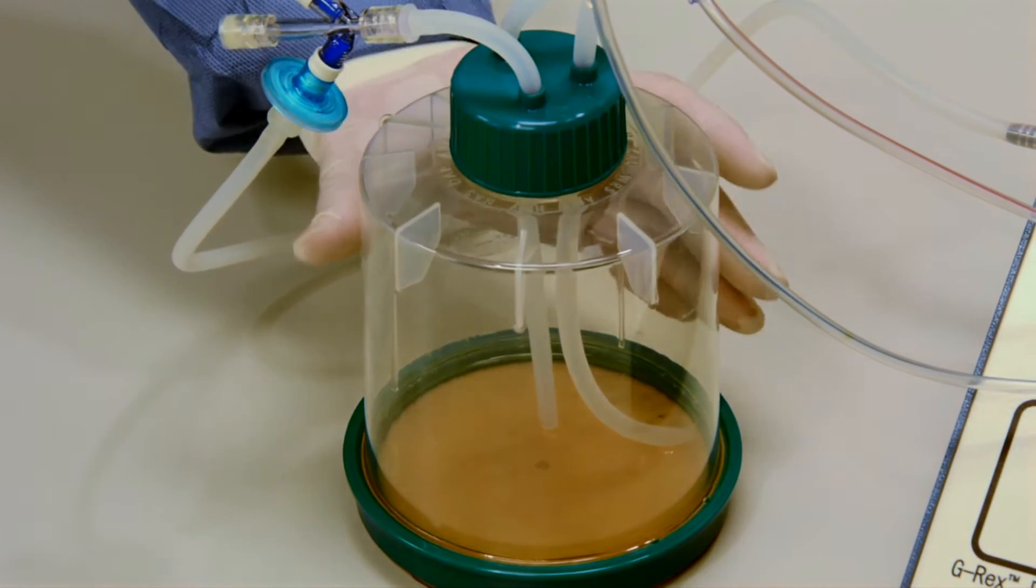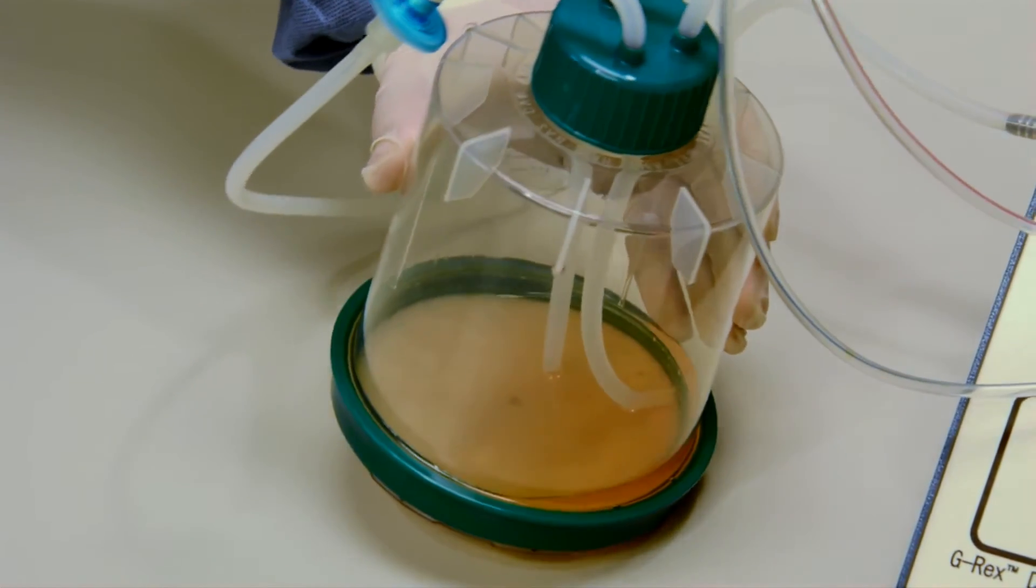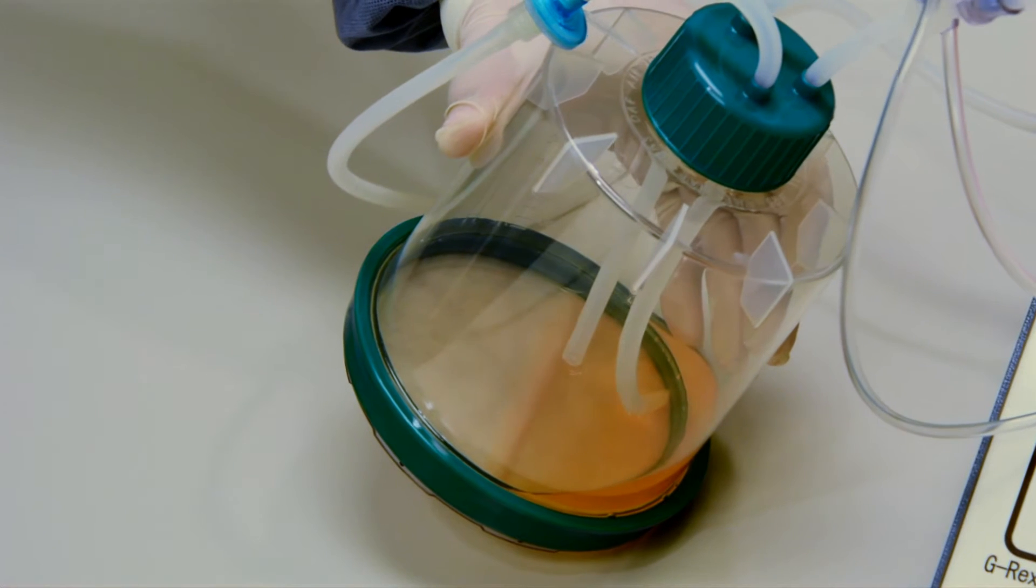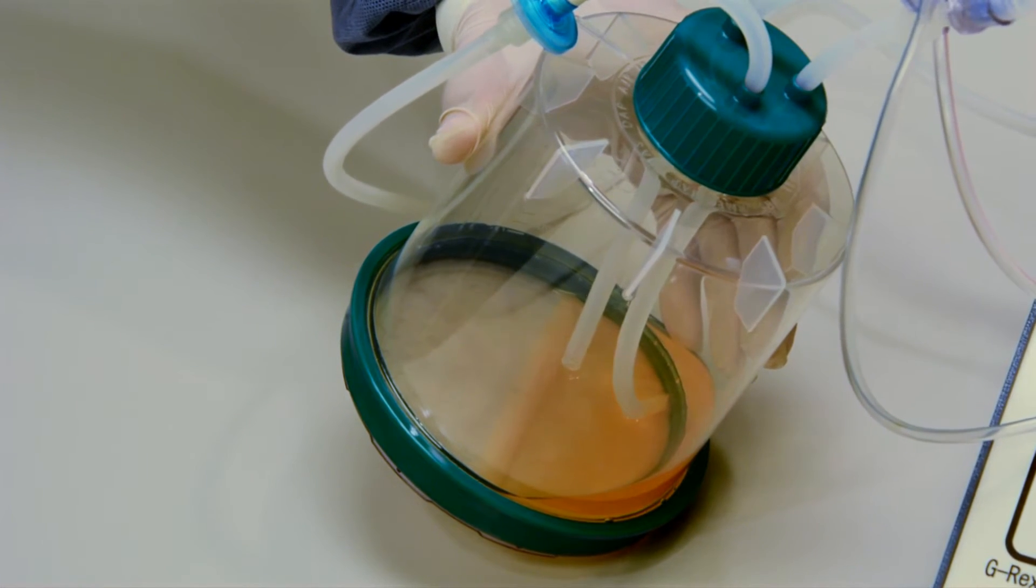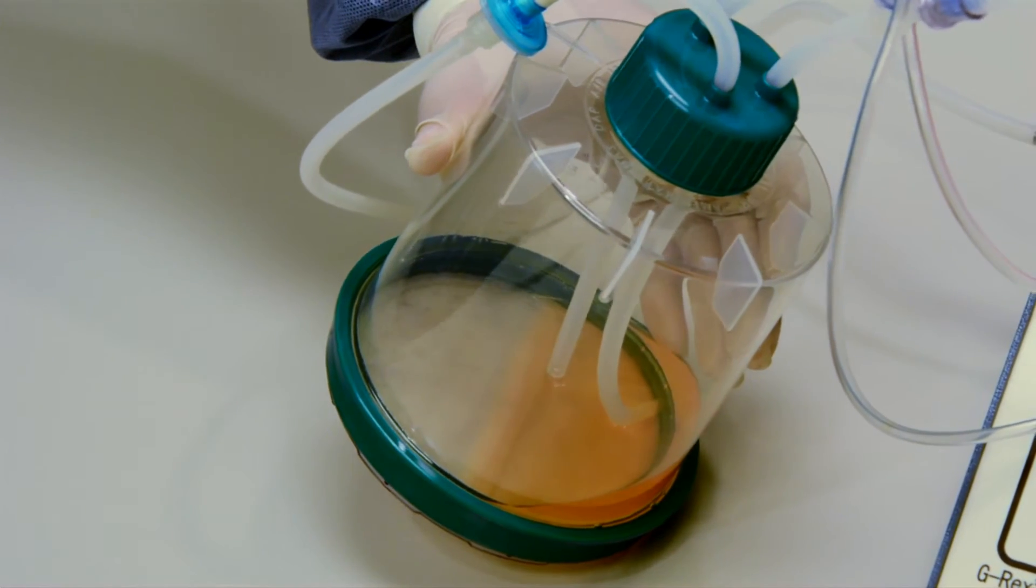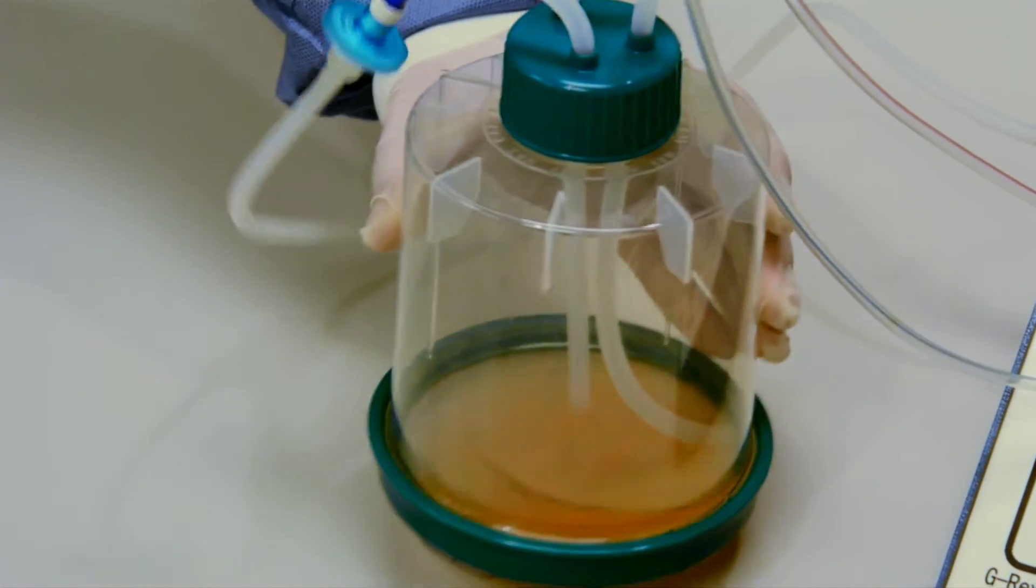When we tilt the G-REX, we can see the cells residing undisturbed on the silicone membrane at the bottom of the device, forming a loose carpet, which can easily be brought into suspension by swirling the flask.